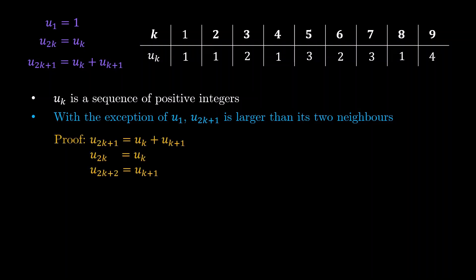Indeed, u2k+1 is given by the sum of uk and uk+1, whereas its neighbors are uk and uk+1 respectively. Now we invoke the first statement that all the terms are positive integers. So clearly the sum is larger than its components.